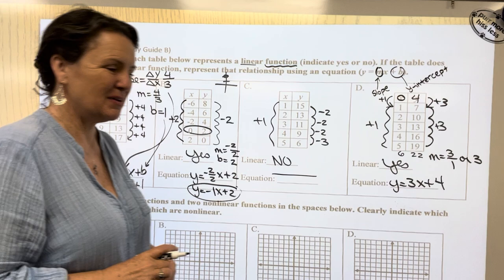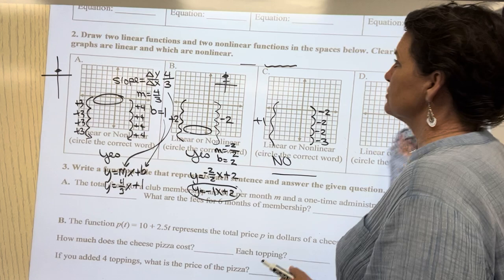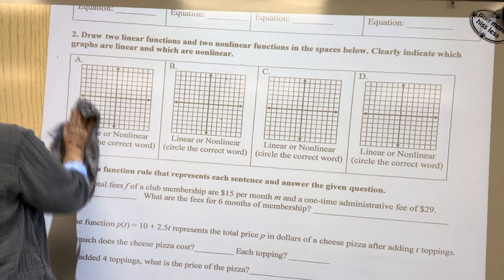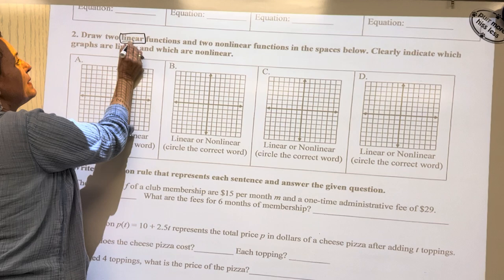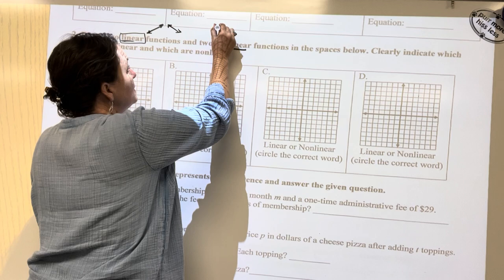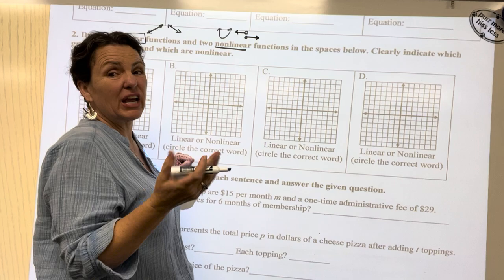Let's read the directions first. I think that's the key. Let's read our directions. It says, draw two linear functions and two non-linear functions in the spaces below. Clearly indicate which graphs are linear and which are non-linear. Okay, so let's talk about all these fancy words. So linear means that when you graph it, it makes a line. So linear means some kind of line. Non-linear would be a shape that is not a line. Maybe a parabola, maybe a piecewise function. Any shape, as long as it's just not a straight line.